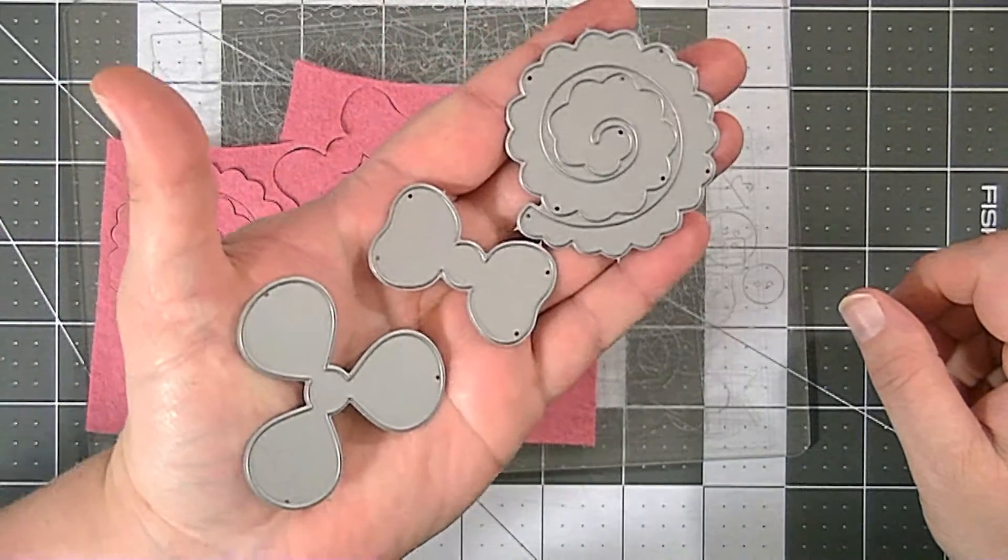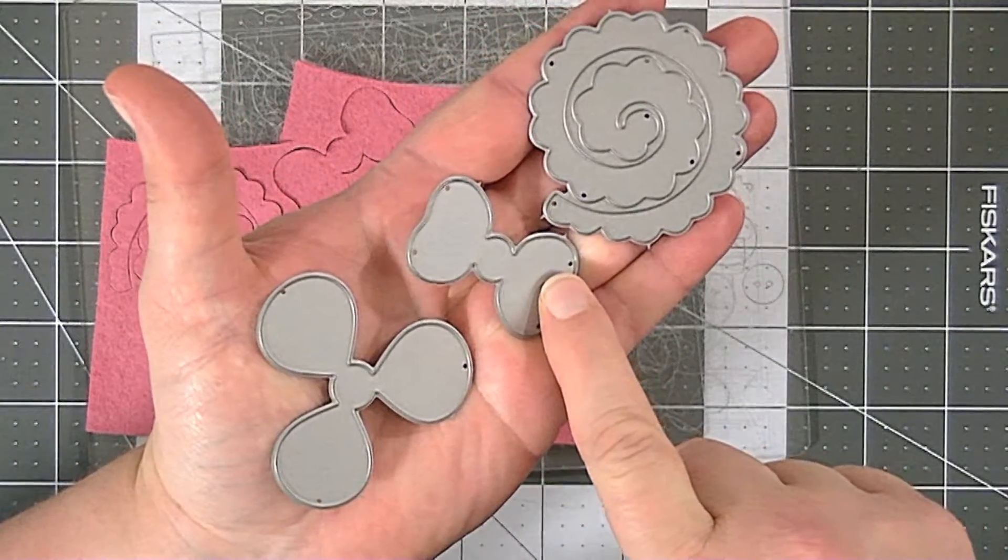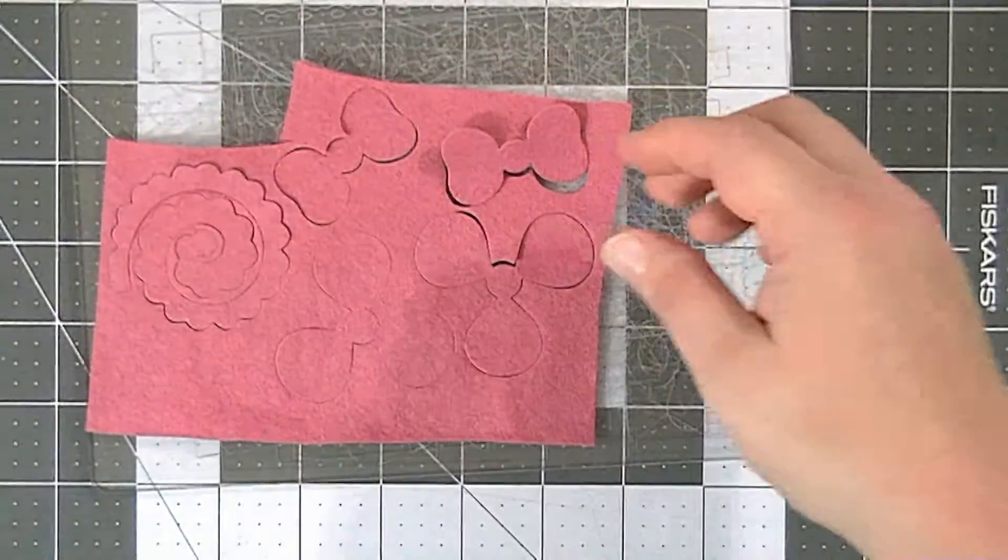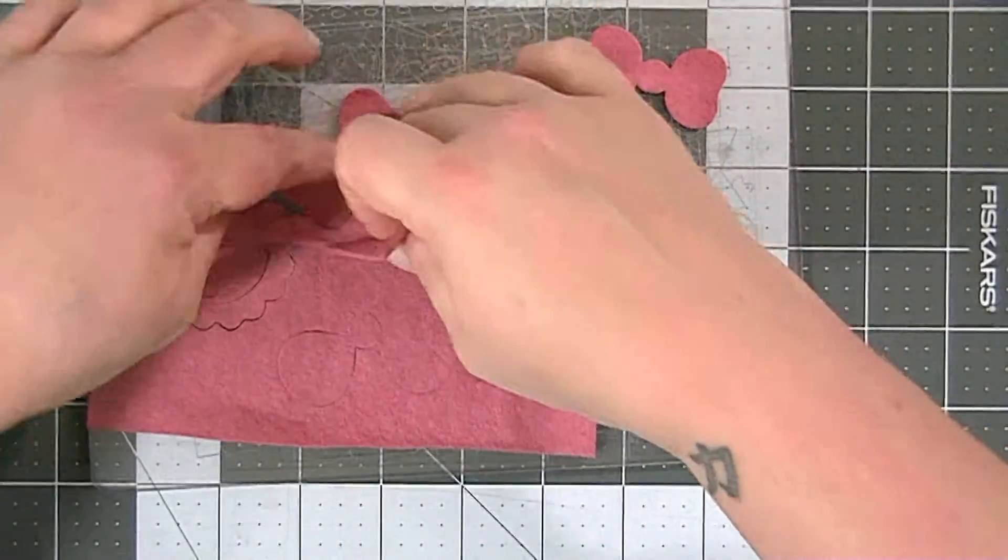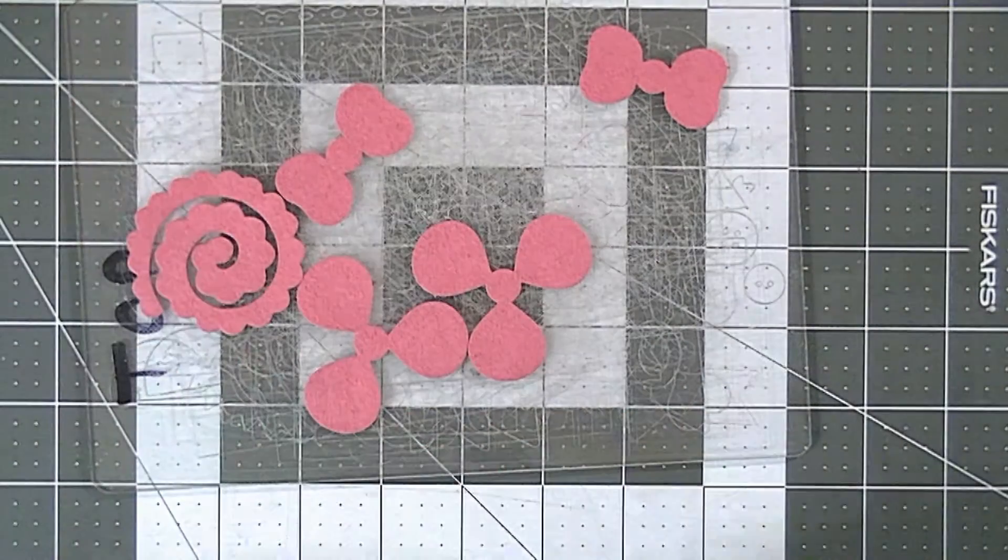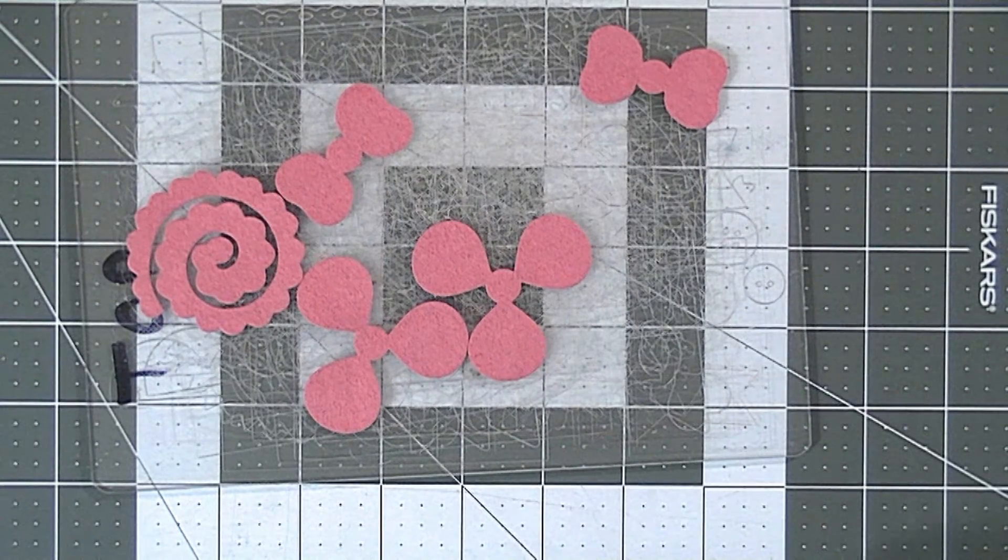When you cut out the pieces you need for the flower, you're going to need two of these, two of these, and one of these. So this is what you're going to have when you're finished cutting—all those pieces right there.